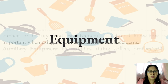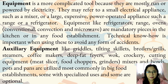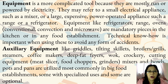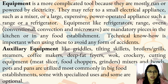Equipment is a more complicated tool because they are mostly run or powered by electricity. They may refer to a small electrical appliance such as a mixer, or a large expensive power-operated appliance such as a range or a refrigerator. Equipment like refrigerators, ranges, and ovens — either conventional, convection, or microwave — are mandatory pieces in the kitchen or in any food establishment. Technical know-how is important when using these to avoid any form of accidents.